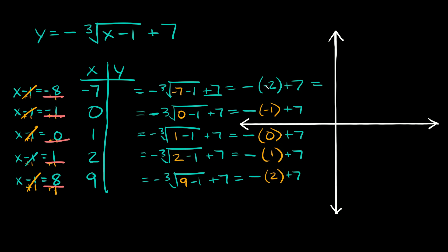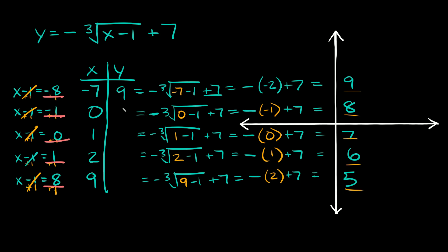Evaluating each one: negative times negative 2 is positive 2, plus 7 equals 9. Positive 1 plus 7 equals 8. Negative 0 is just 0, so 0 plus 7 equals 7. Negative 1 plus 7 equals 6. And negative 2 plus 7 equals positive 5. So our y values are 9, 8, 7, 6, and 5.